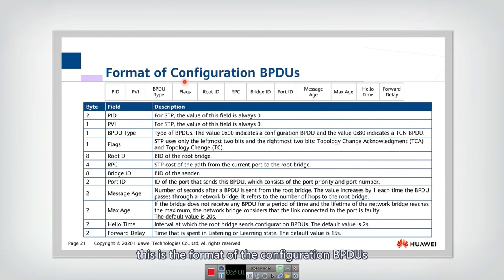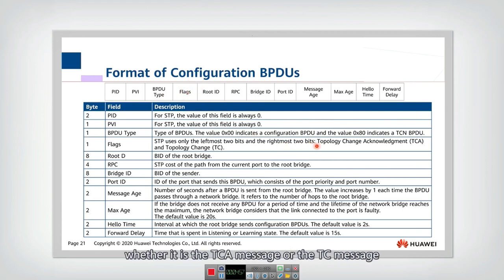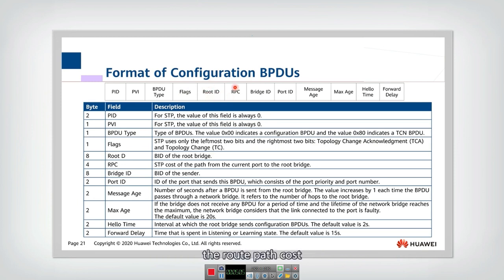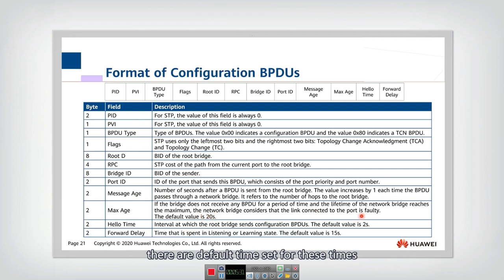This is the format of the configuration BPDU. It includes the PID and PVI fields, which are always set to zero, and a BPDU type field indicating whether it is a configuration BPDU or topology change BPDU. There are also flags indicating whether it is a TCA or TC message. Additional fields include: the root ID, the root bridge ID, the root path cost, the bridge ID, and the port ID — these four are used to calculate the best port and best path cost. Finally, there are fields for message age, max age time, hello time, and forwarding delay time, all of which have default values.